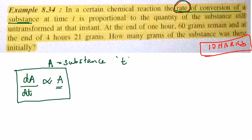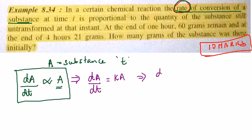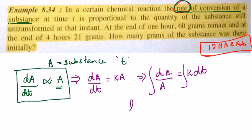Once we understand this equation, we remove the proportional sign. So dA/dt = kA, where k is some arbitrary constant. Next, we bring all the A's to one side and take t to the other side. Integrating on both sides, we get: log A = kt + log C.